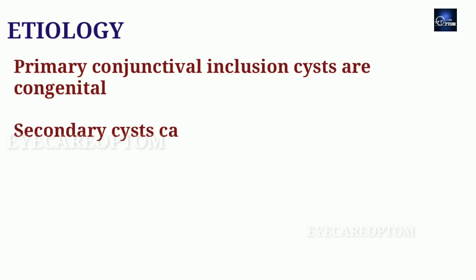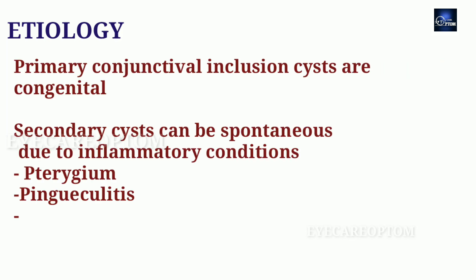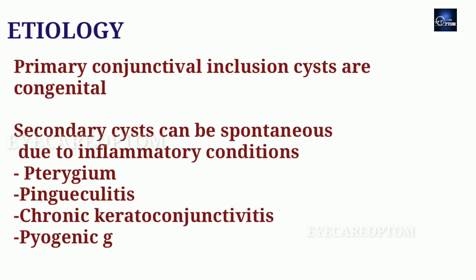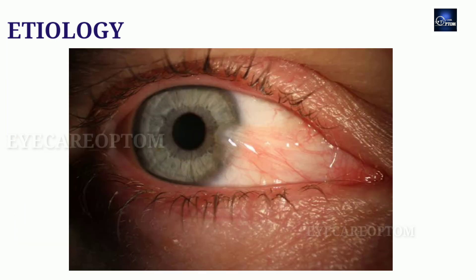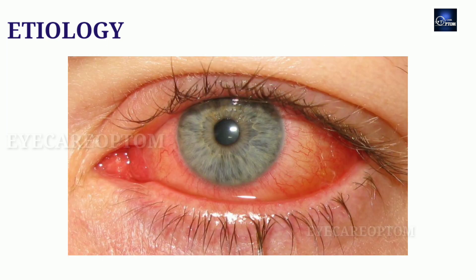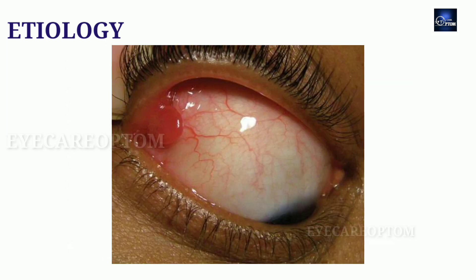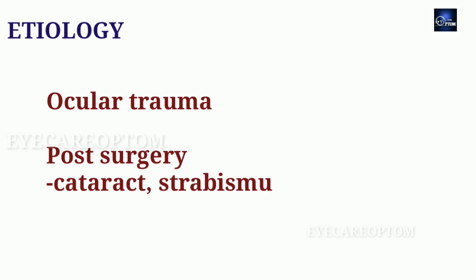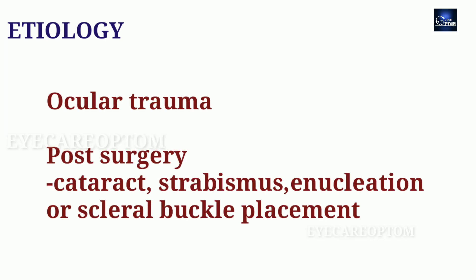Etiology of this condition: primary conjunctival inclusion cysts are congenital. Secondary cysts can be spontaneous or most commonly due to inflammatory conditions of the conjunctiva such as pterygium, pingueculitis, chronic keratoconjunctivitis, and pyogenic granuloma, or due to ocular trauma or post-surgery such as cataract, strabismus, enucleation, or scleral buckle placement.